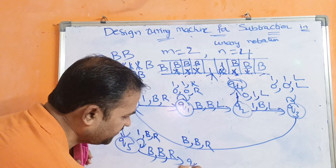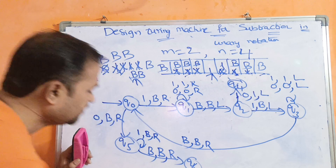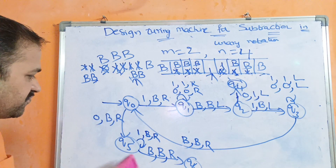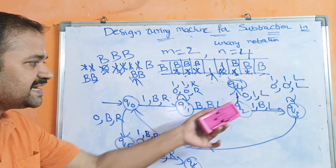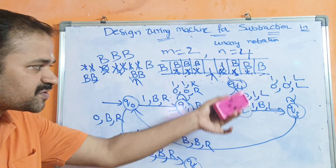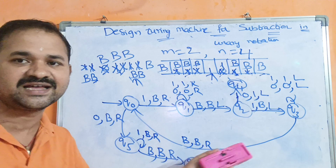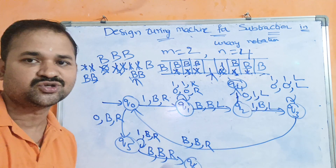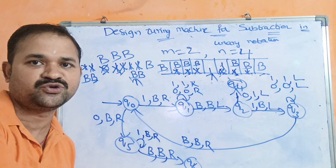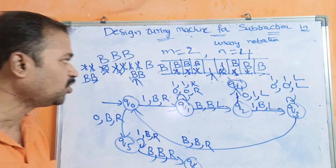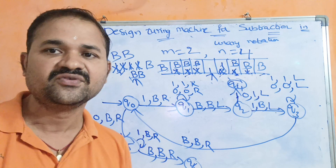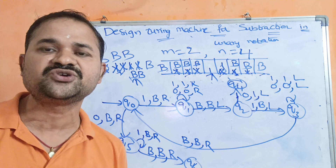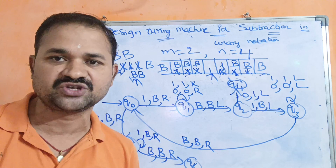Reading a blank symbol on q5, the machine halts. This Turing machine handles both cases: when m is greater than n (result is m minus n ones) and when m is less than or equal to n (result is zero, i.e., all blank symbols).